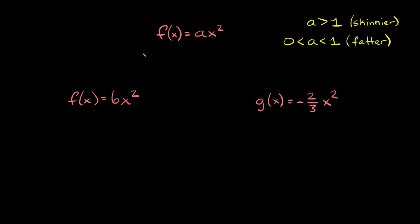In this video I'm going to teach you how to graph parabolas in the simplest form: f(x) = ax², where a is just a coefficient — just a number — and it's positive or negative. And this tells you the story as to how you graph your parabola.